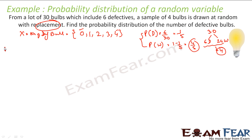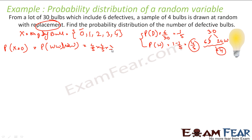Now let us write the distribution. Probability of X equal to 0 means no defective bulb — all 4 bulbs you got are working. So this is 4 by 5 into 4 by 5 into 4 by 5 into 4 by 5, which equals 4 by 5 to the power 4, that is 256 by 625.